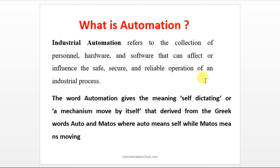The word comes from Greek: 'auto' means self, and 'matos' means moving. These two words were combined to make the word automation. We introduced automation mainly to replace human operators, to improve safety, and to increase production.